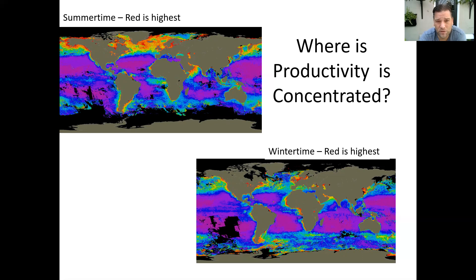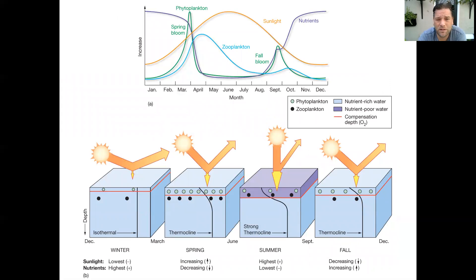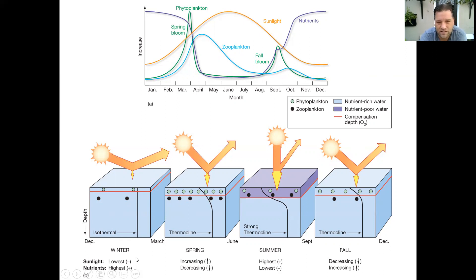This is somewhat of a complex diagram, but let's break it down into sections. On the bottom we've got a picture of the ocean, the sun with the angle of the energy, the depth of the water, the date, whether there are nutrients, and how much sunlight there is. Starting with winter: in the winter season you have low sunlight — the sun's angle is low — but you also have the highest nutrient count, so there are more nutrients in the water.